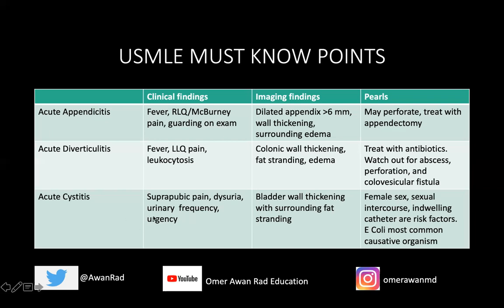And finally, acute cystitis — infection or inflammation of the bladder — typically presents with suprapubic pain, dysuria, urinary frequency and urgency, typically more seen in females than males because of the shorter urethra. Bladder wall thickening and surrounding fat stranding is what we're looking for on CT imaging. Female sex, sexual intercourse, and indwelling catheters are risk factors. Of course, E. coli is the most common causative organism for UTIs and acute cystitis. In sexually active females you can also get infected with Staphylococcus saprophyticus, but E. coli is still more common even in sexually active females. E. coli is always going to be the answer on the USMLE for the most common causative organism for acute cystitis.